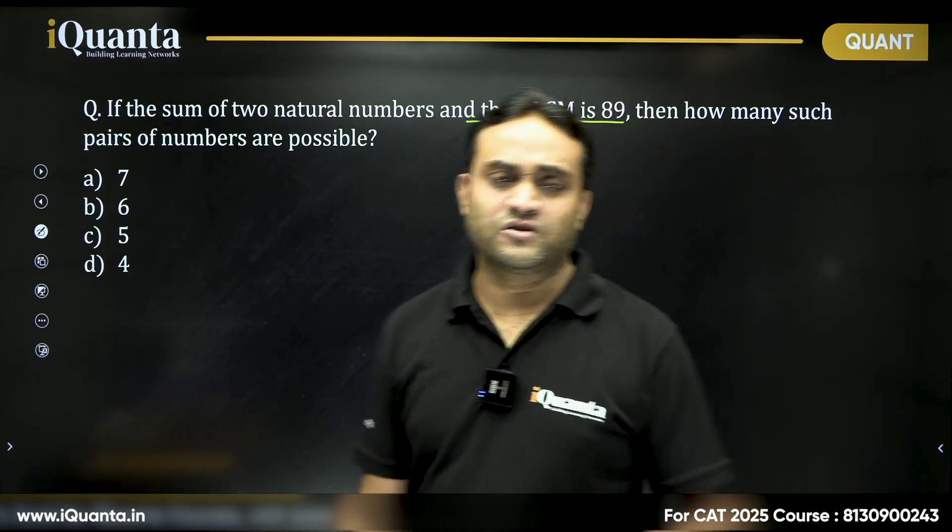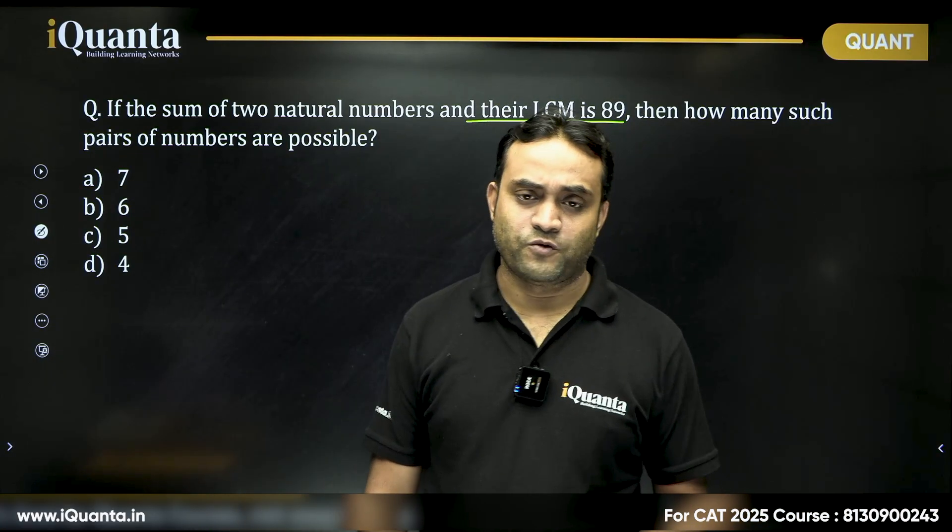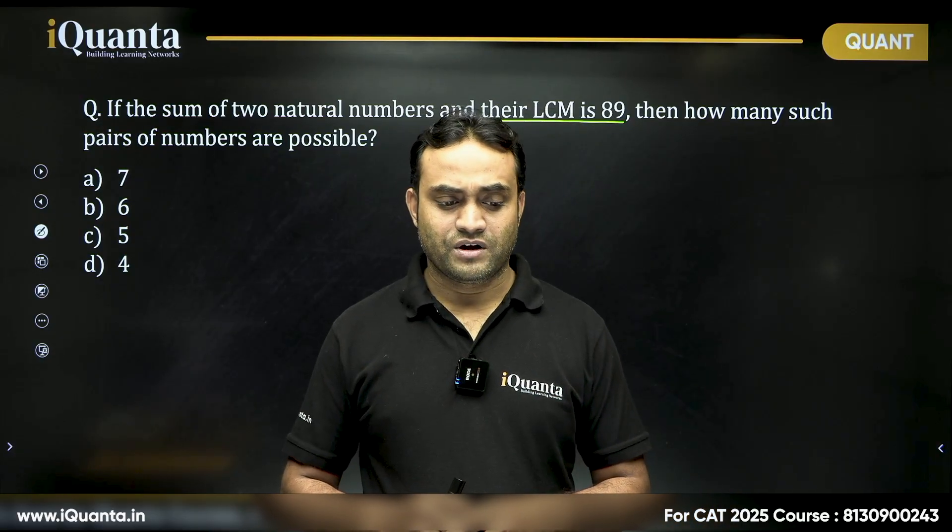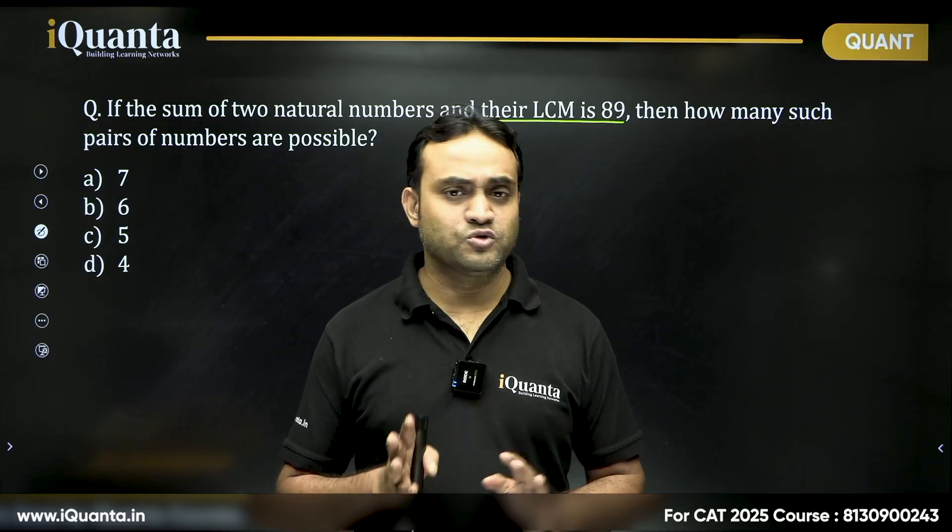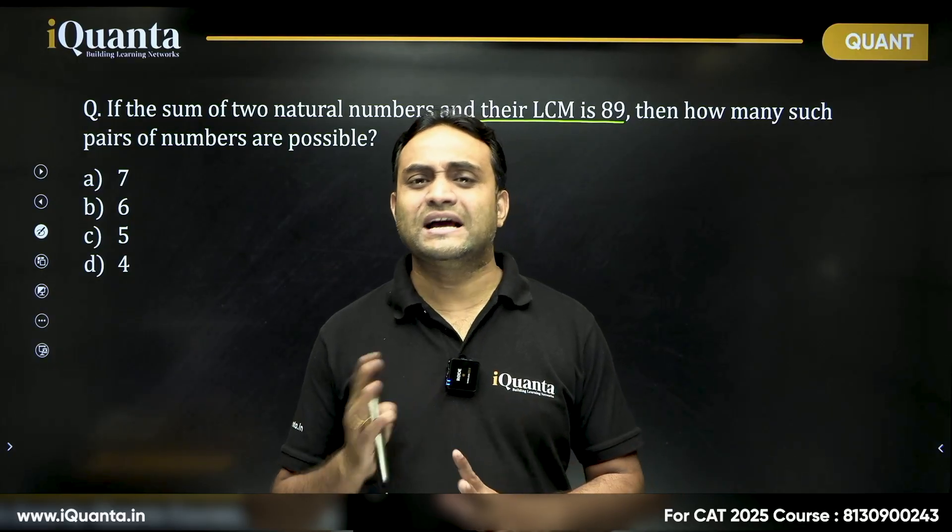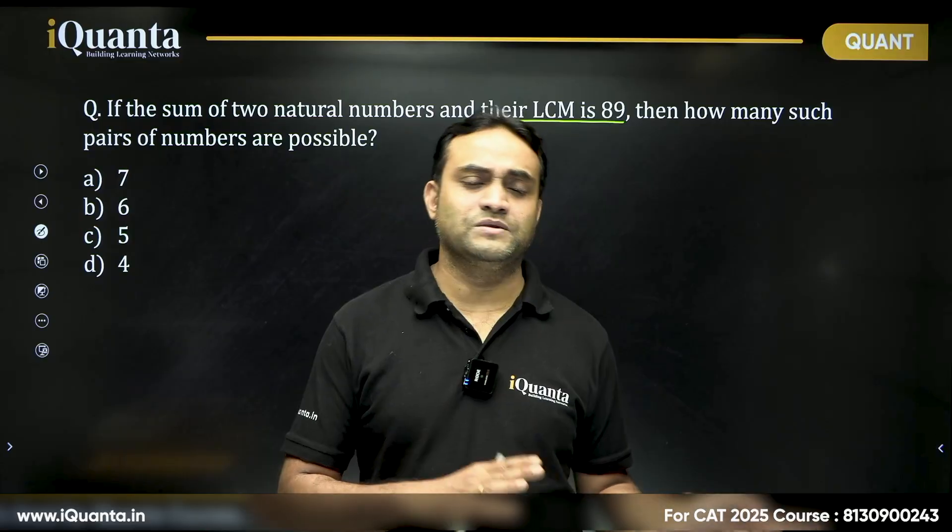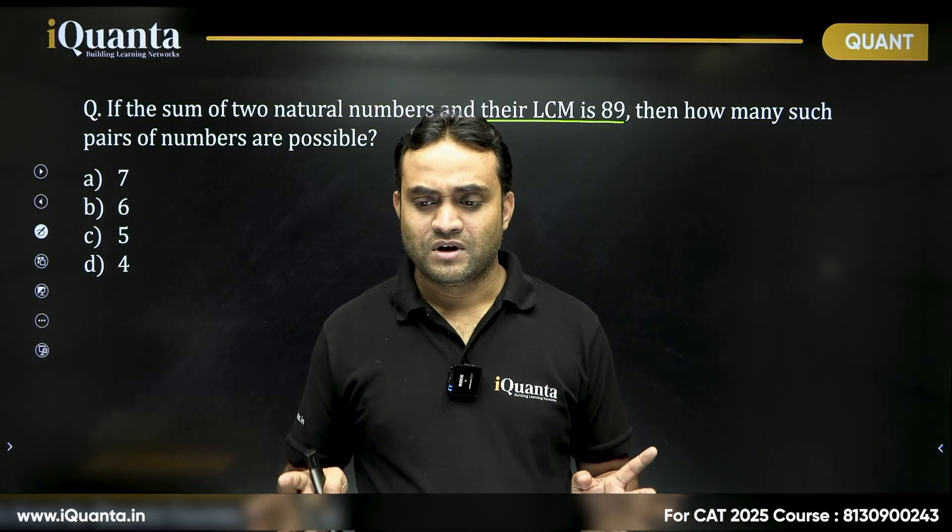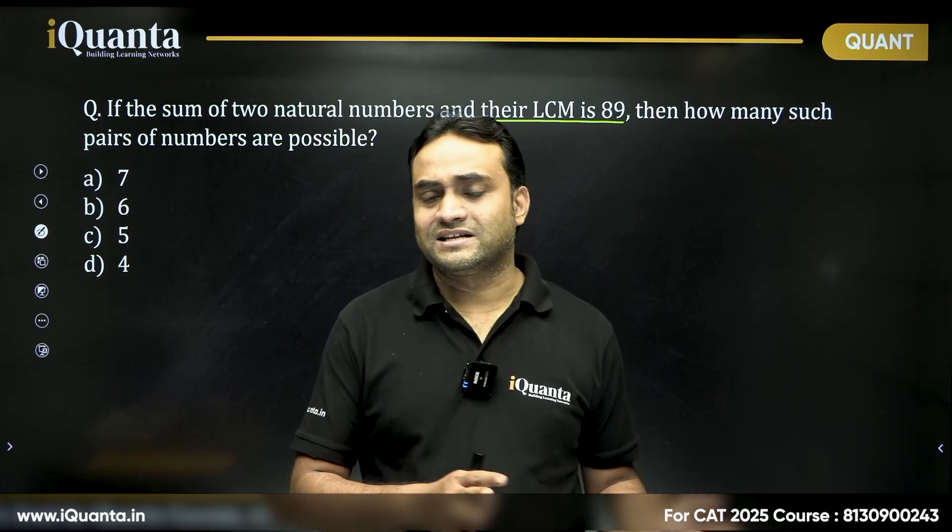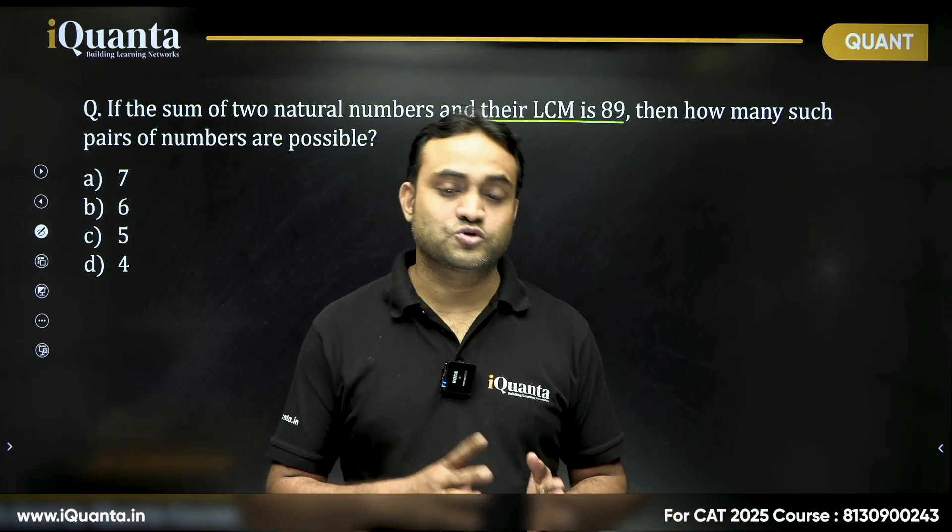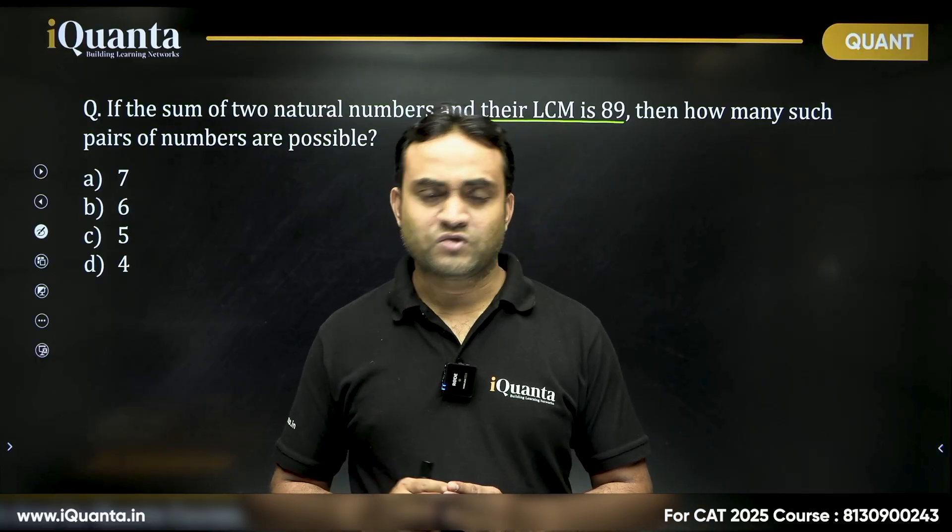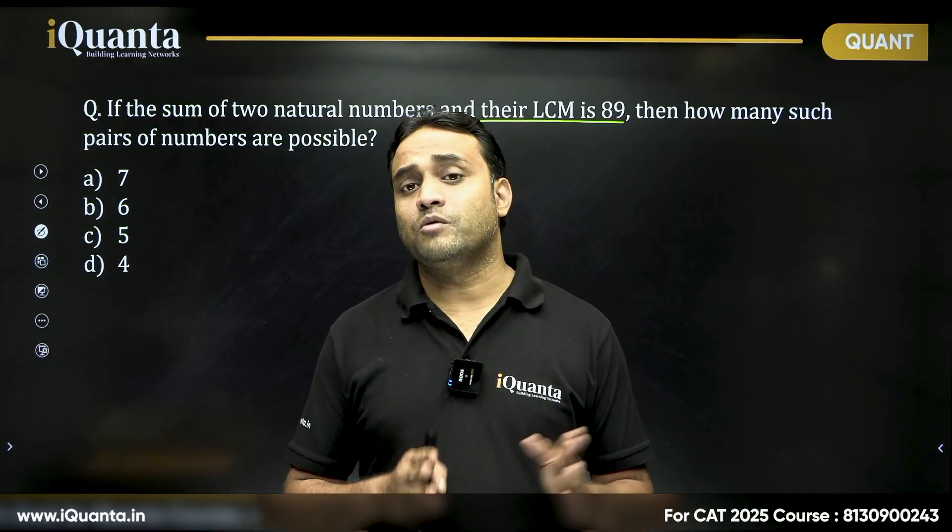How do we start with this question? First, how do we choose two such numbers where we can figure out their sum and their LCM? If I choose two variables A and B, then how do we write their LCM? It's a different thing writing their product. If I choose two numbers A and B, their product will be A into B. But what will be their LCM? Is there any common factor between them?